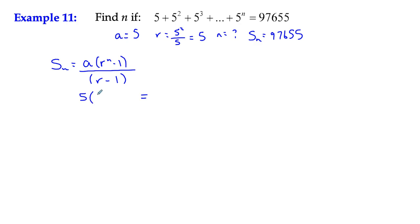So I've got a = 5, r = 5. So: 5(5ⁿ - 1)/(5 - 1) = 5(5ⁿ - 1)/4 = 97,655.